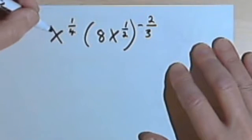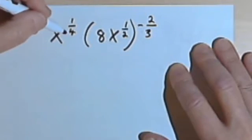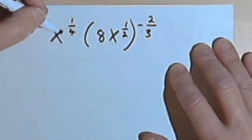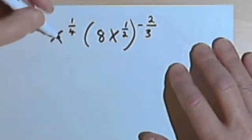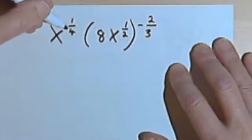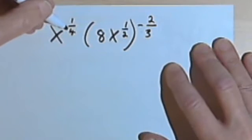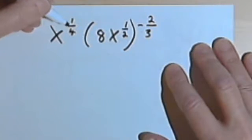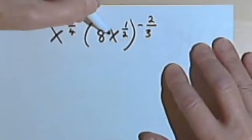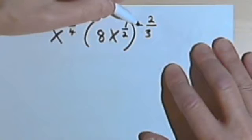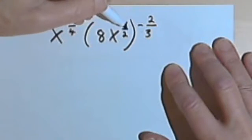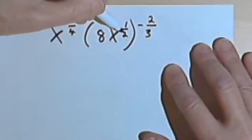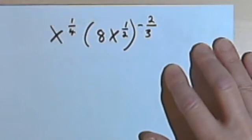The thing to remember about dealing with something like this is we're going to use exactly the same rules for the exponents that we would use if the exponents were whole numbers. So the place to start would be to take this 8x to the one-half and raise everything to the negative two-thirds. If this is confusing, ask yourself what you would do if it was 8x squared raised to the negative two.